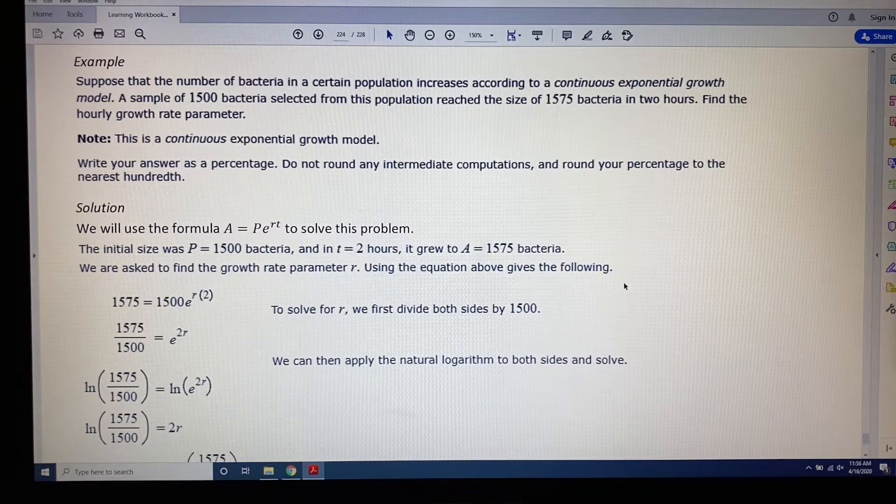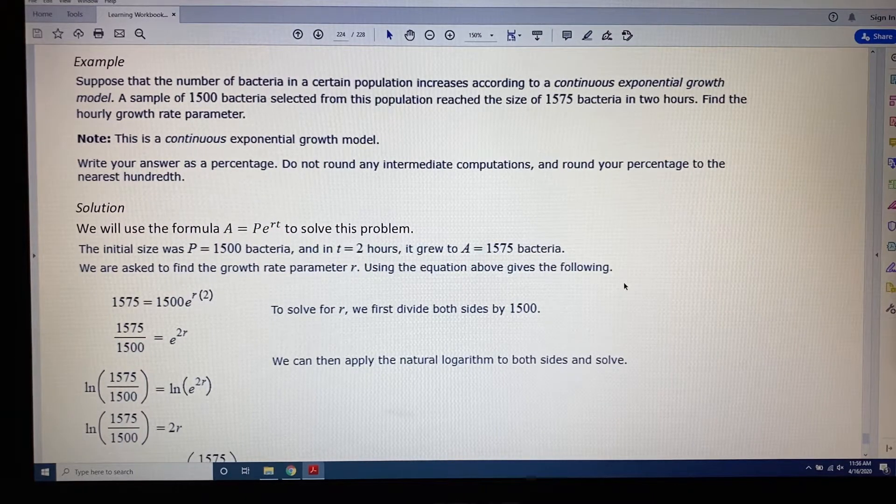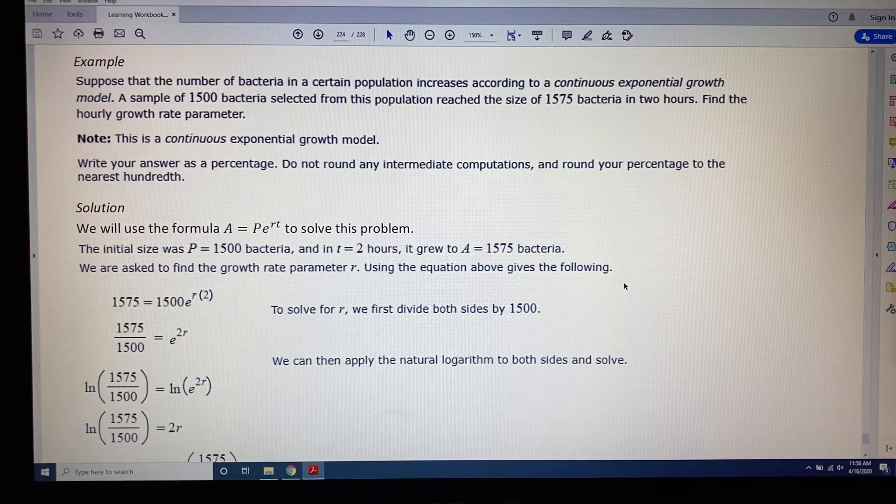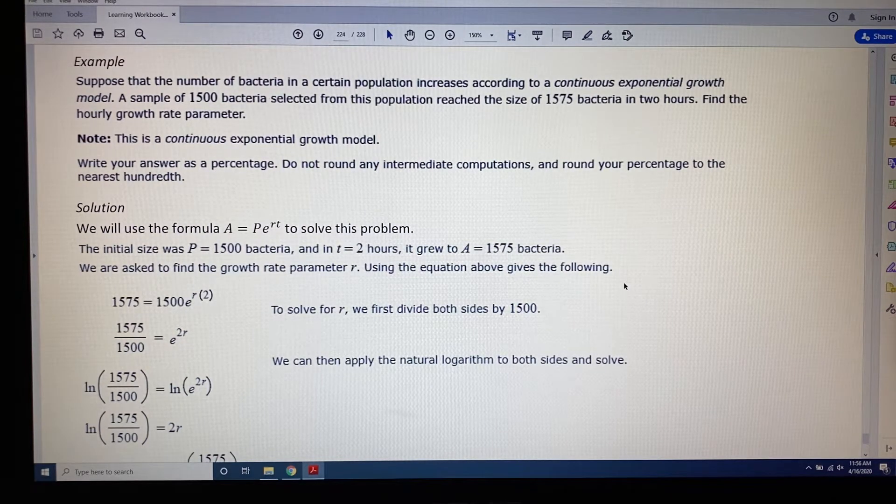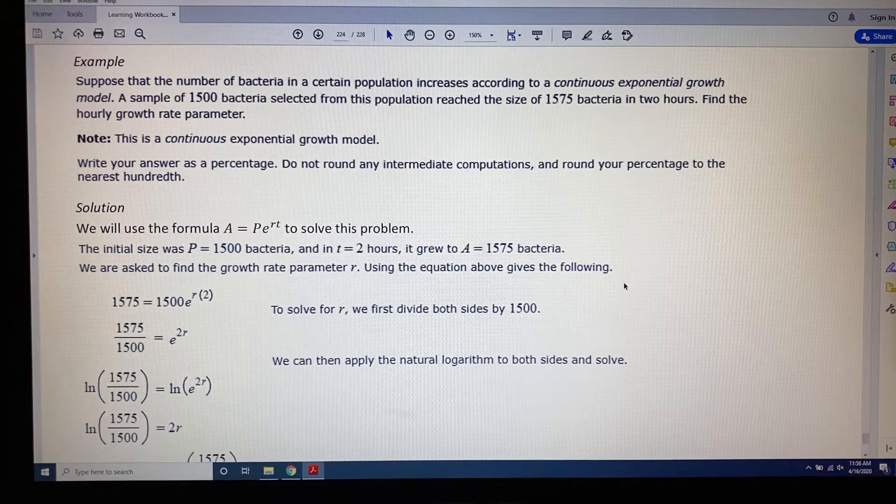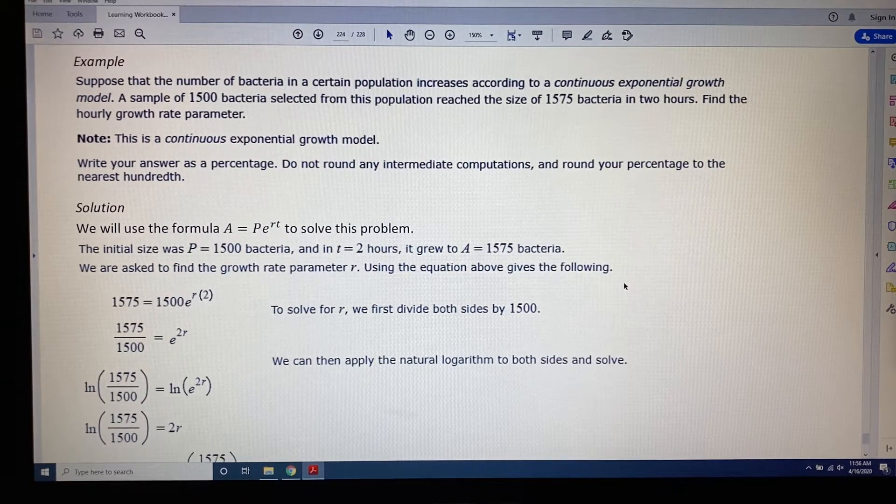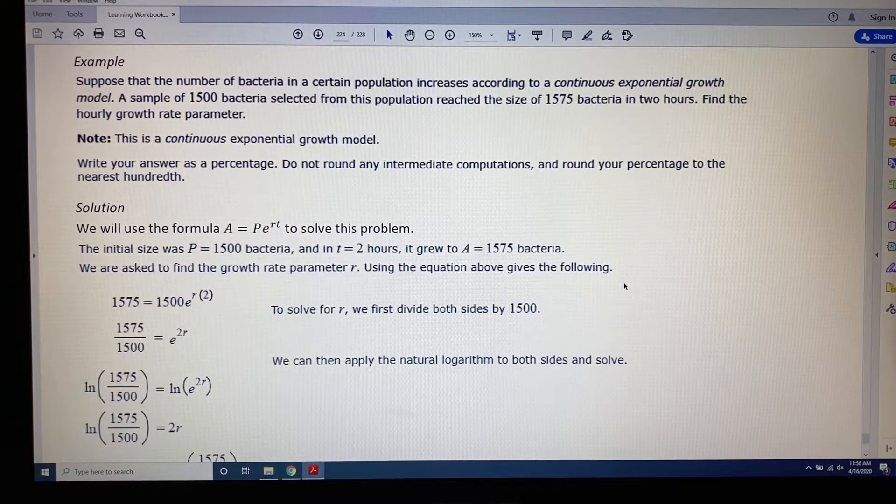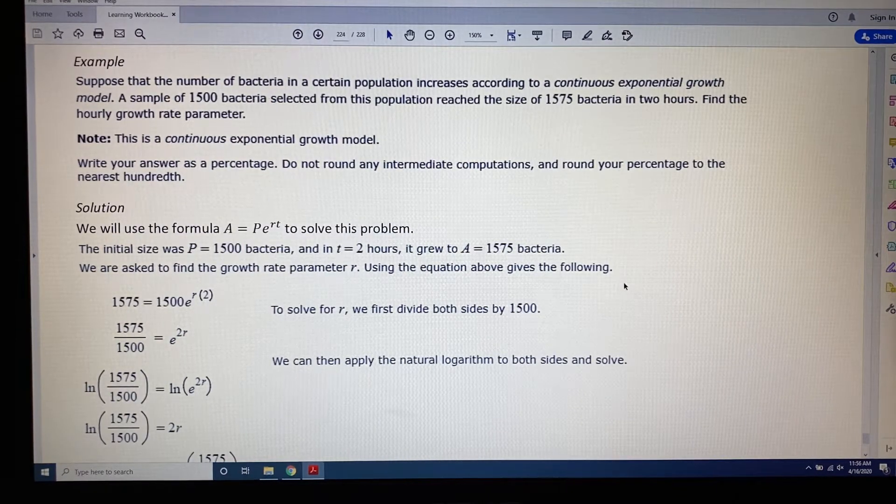Please open in your learning workbook to page 224 as we read another example. Suppose that the number of bacteria in a certain population increases according to a continuous exponential growth model. A sample of 1,500 bacteria selected from this population reached the size of 1,575 bacteria in 2 hours.